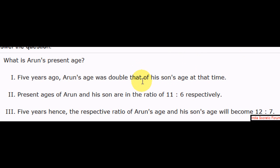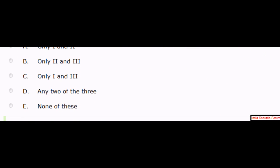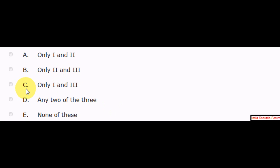Let's take one more question. What's Arun's present age? Here are the 3 answers. From here you have to define what's the right answer. 5 years ago, Arun's age was double that of his son's age at that time. 5 years ago. Present age of Arun and his son are in the ratio of 11 is to 6, respectively. 5 years hence, the respective ratio of Arun's age and his son's age will become 12 is to 7. What are all the possible answers? Choices are: now his age is only 1 and 2, or his age is 2 and 3, only 1 and 3, any 2 of the 3, none of this. What could be the answer?